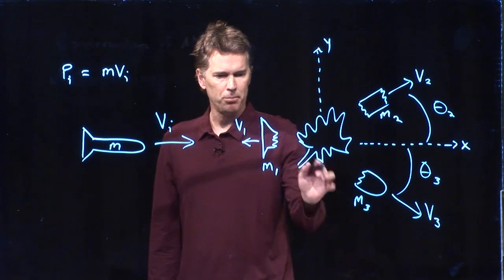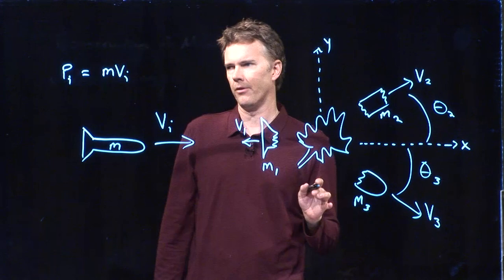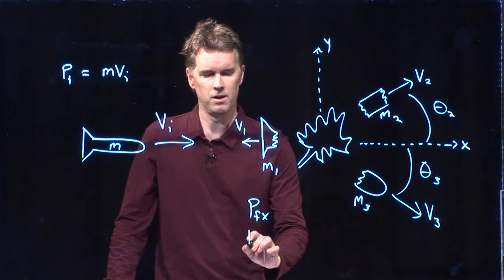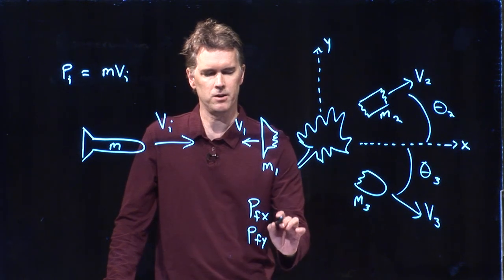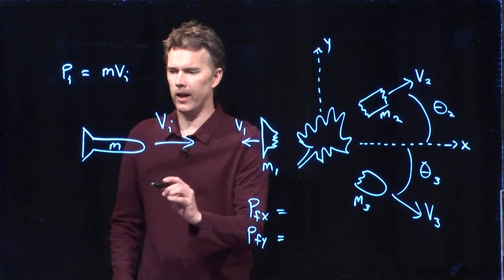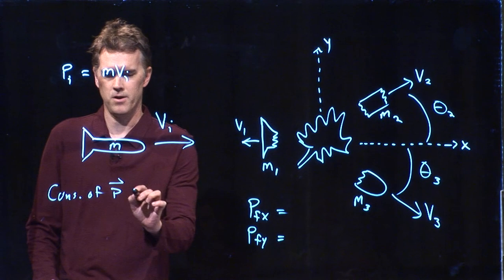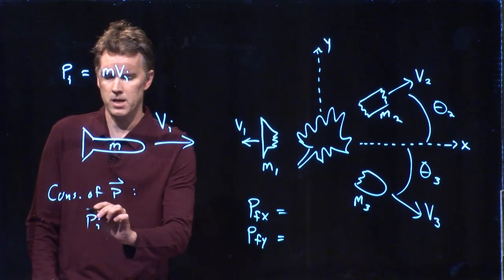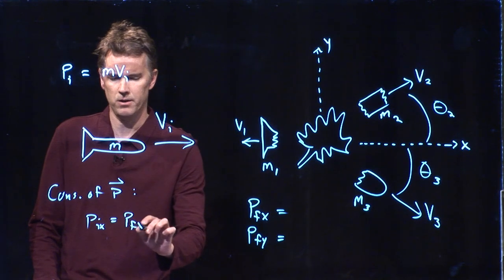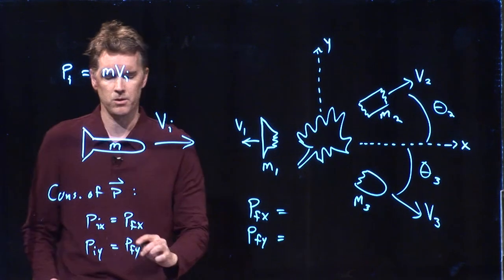In the final picture over here, we have a couple different things. We have p final in the x, and we have p final in the y. And what I know is that conservation of momentum tells me the following. p initial in the x is equal to p final in the x. p initial in the y is equal to p final in the y.